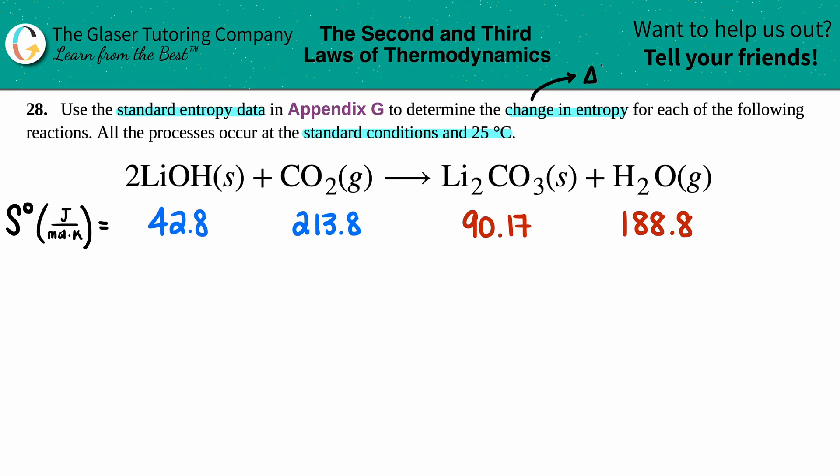Since we're using standard data, we're going to the back of a textbook, this appendix G, we have to find delta S naught. The naught always means that we're using textbook values, standard values, and that's exactly what I did.